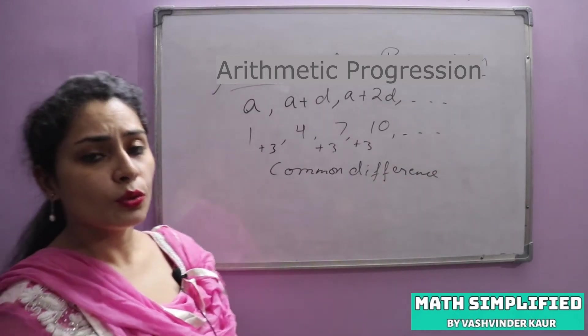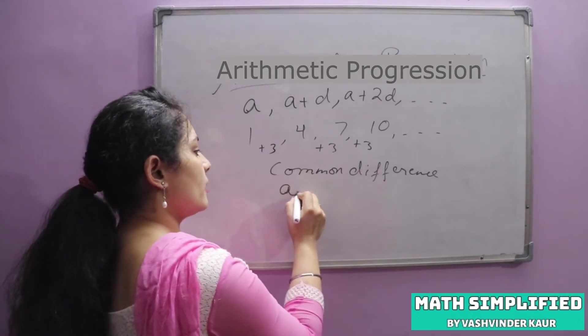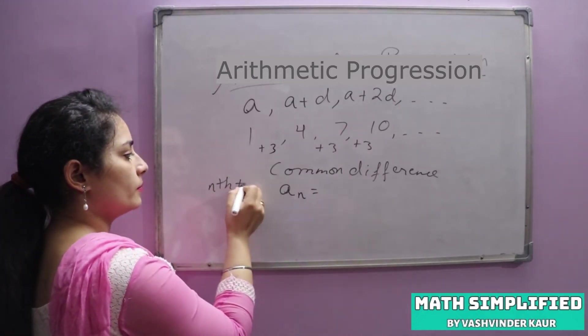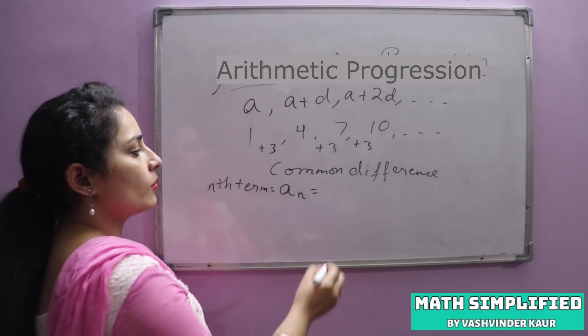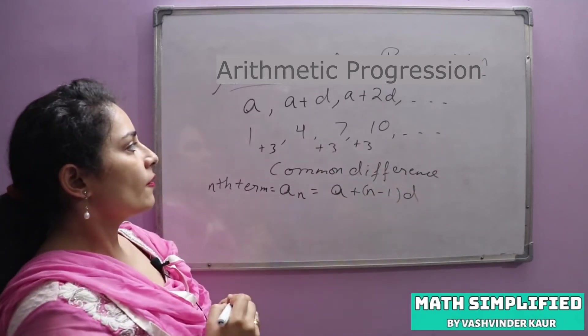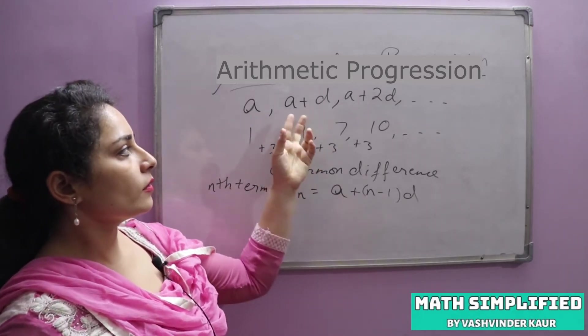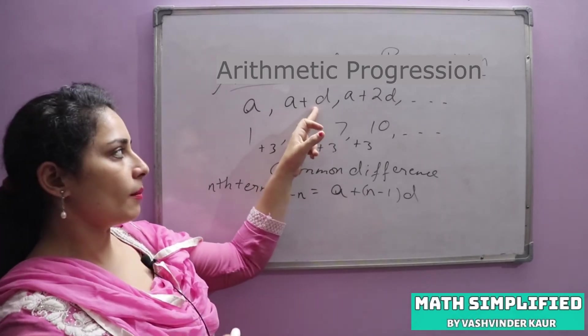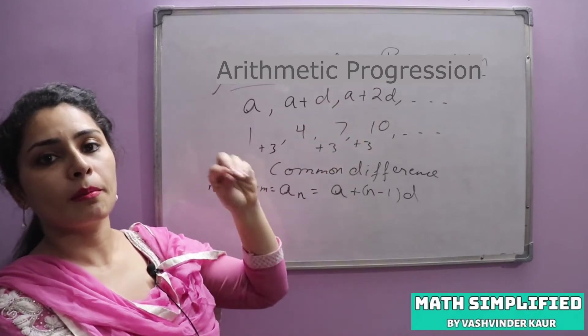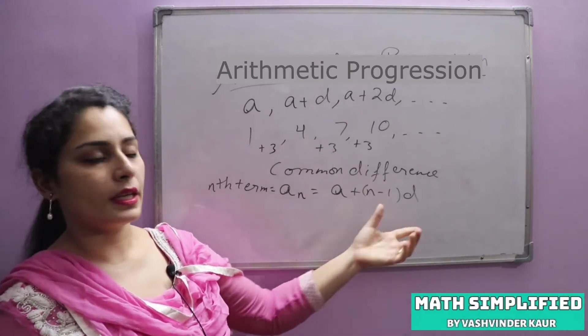Now there are only two formulas, two basic formulas here which we use. That is AN, which means number of terms or we can say nth term. The formula is a plus n minus 1d. This is a plus d, this is third term a plus 2d. So if we are saying n, then here is n minus 1d.